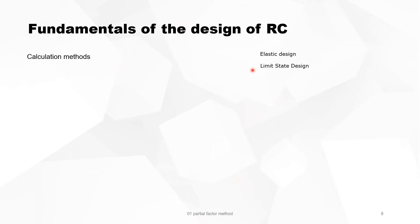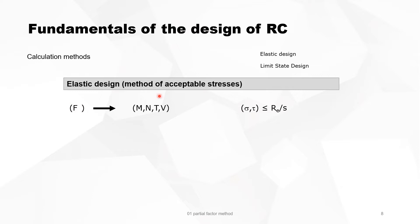Elastic design, or the method of acceptable stresses, works as follows: You have a force, you convert the force into bending moment M, normal force N, torsion T, and shear force V. From there you calculate the stresses and shear stress, and you compare it with a limiting factor. This limiting factor is a figure that you derive from tests and divide by a coefficient which we call the safety factor S.